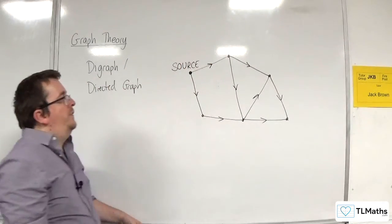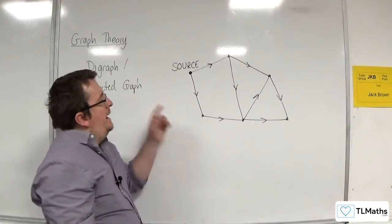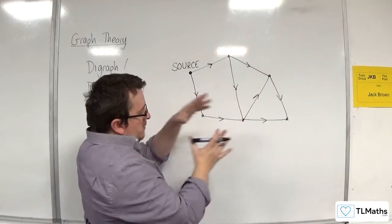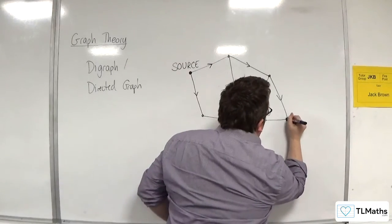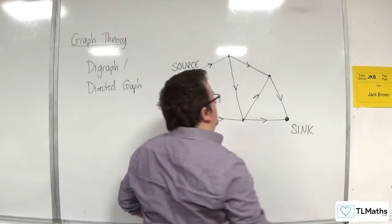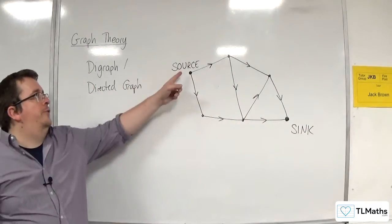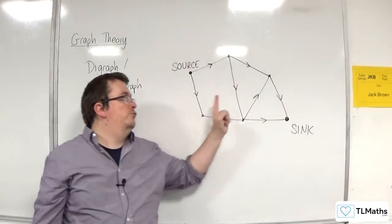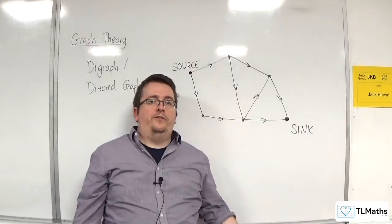And the node that they all flow into at the end, this is referred to as a sink. So we're flowing from the source through the graph to the sink.